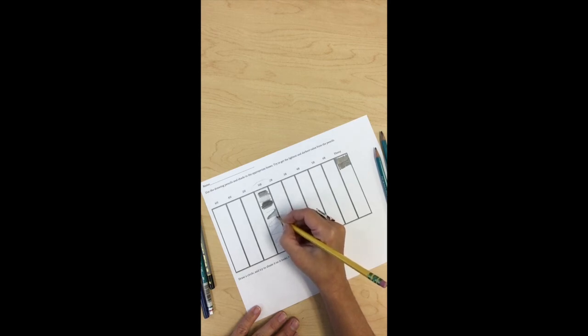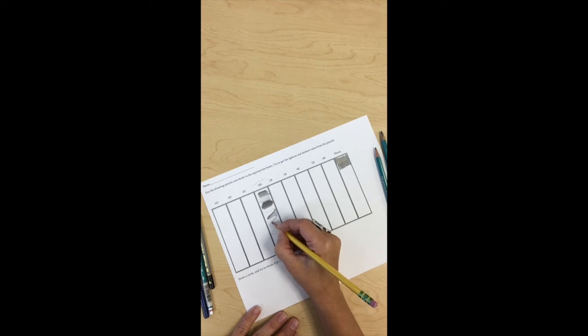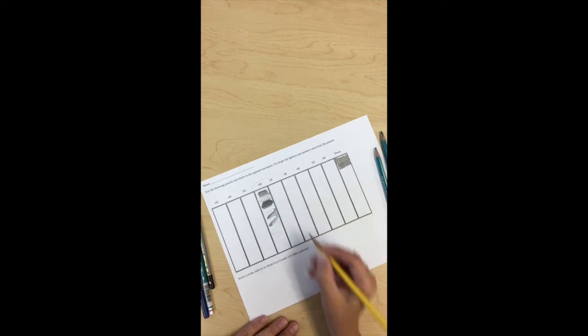You're keeping the pencil lines close together. I'm shading in between my scribbles here. Try each one of these different ones. When you get down here, these directions say draw a circle, try to shade it so it looks 3D.